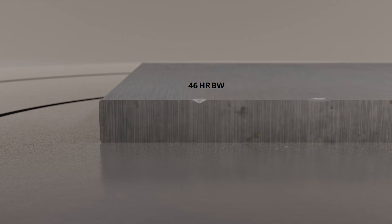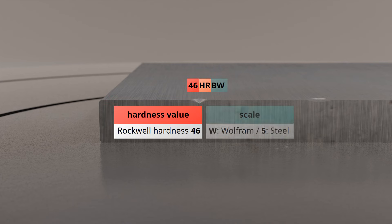The standard compliant indication of Rockwell hardness consists of the hardness value and the corresponding scale. When spherical indenters are used, it is also necessary to specify the material of the ball. Today, cemented carbide balls made of tungsten are almost exclusively used, designated with the letter W for Wolfram. In the past, steel balls were also used, identified with the letter S.